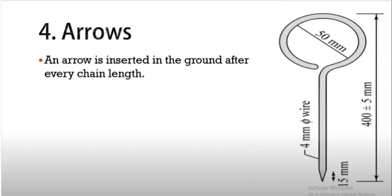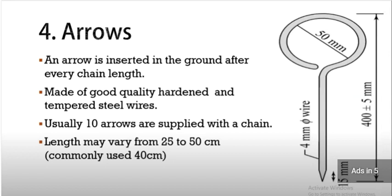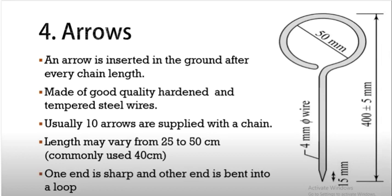Next are arrows. Arrows are also used to mark stations. An arrow is inserted into the ground after every chain length, so after a chain length is complete, arrows are fixed to mark that place. Arrows are made of good quality hardened steel. Usually 10 arrows are supplied within a chain. The length varies from 25 to 50 cm. One end is sharp and the other end is bent into a loop.